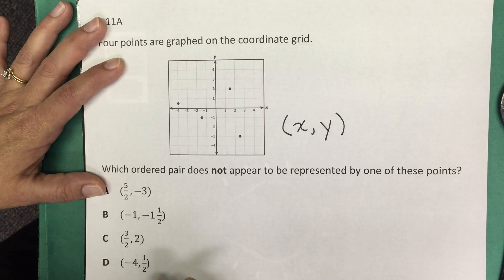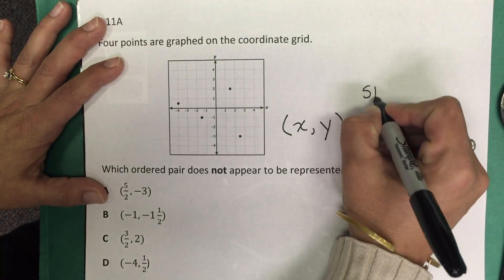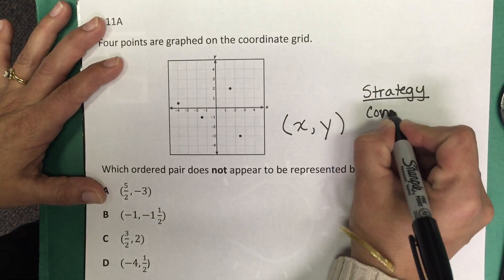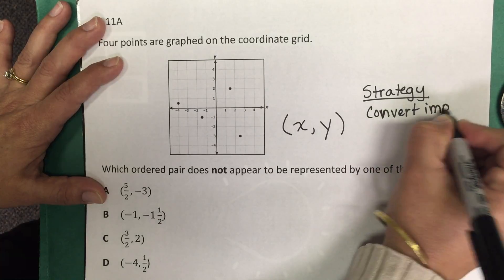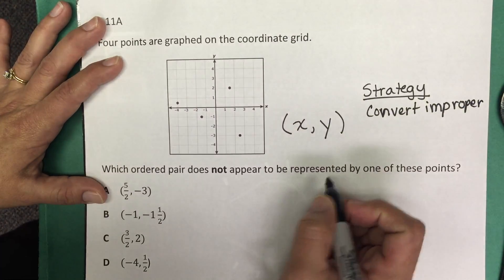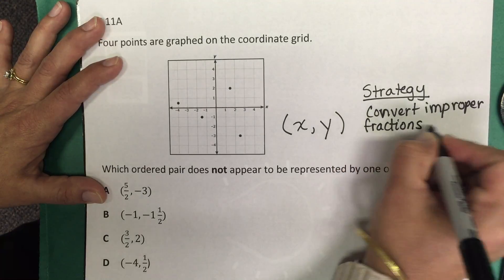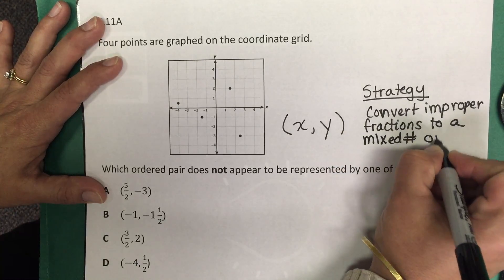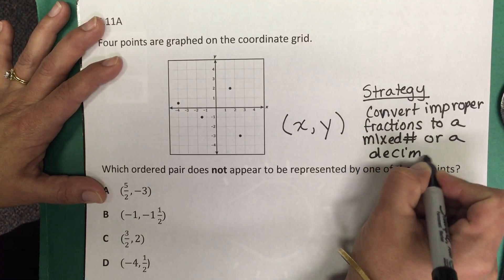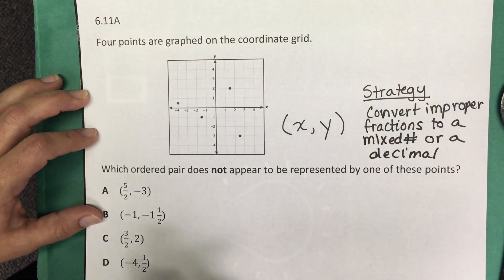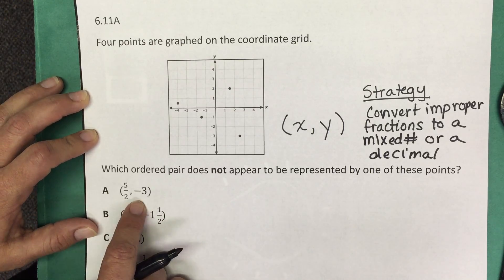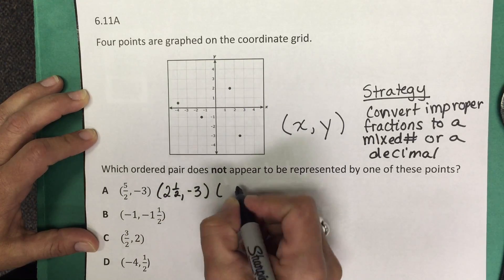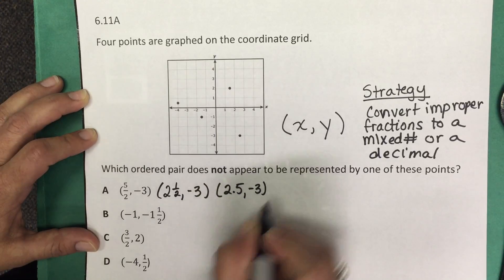So I think in this case a good strategy is to convert improper fractions to a mixed number or a decimal. So let's look here: five halves. For the first answer choice, we have the coordinate five halves, negative three. So we can change that to two and one half and negative three, or two point five and negative three.